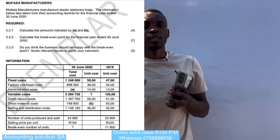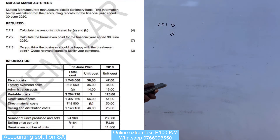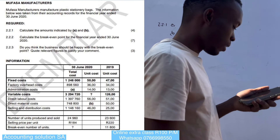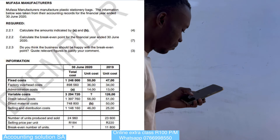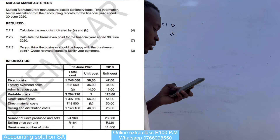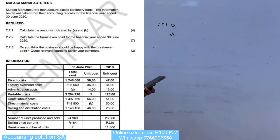For question 2.2.1, they say calculate the amounts indicated by A and B. If you check the table, we are given fixed costs which contain factory overhead and administration cost, and variable costs which contain direct labour, direct material, and selling and distribution. We also have units produced and sold, selling price, and break-even units. Data is given for 2019 and 2020 — in 2020 we have unit cost and total cost, and in 2019 only unit cost is given.